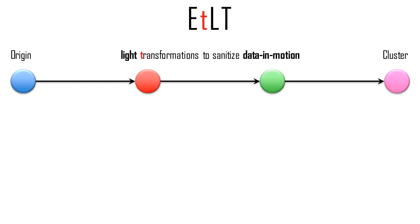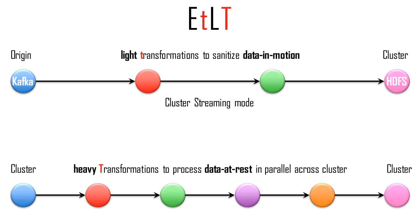Instead of ETL, the StreamSets people sometimes talk about an ETL design pattern with a small T and a big T. The small T is for when you do very light transformations on data as it streams in — your main goal is to land the raw data quickly. For example, you could use StreamSets in cluster streaming mode to consume data continuously from a Kafka topic; under the covers, StreamSets runs a Spark streaming job to land raw data into your Hadoop distributed file system. The big T uses cluster computing to run computationally expensive transformations on the raw data.